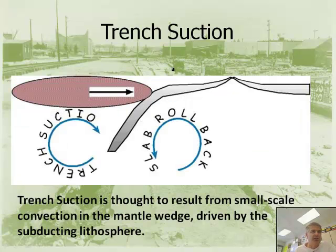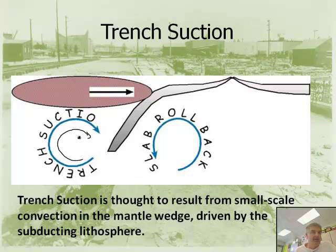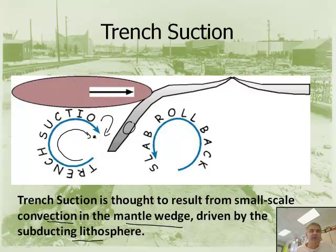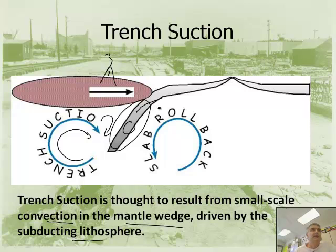Trench suction sounds wild — the trench is literally sucking. A small convection current forms, causing this section to go down. Trench suction is thought to result from small-scale convection in the mantle wedge driven by the subducting lithosphere. This is also where we get volcanoes. Then there's slab rollback: as the huge slab underneath the continent rolls back, that's another force contributing to plate motion.